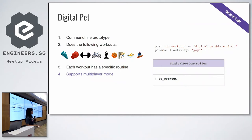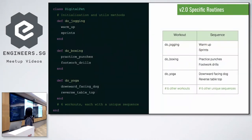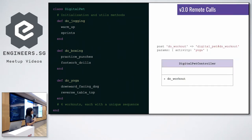We choose the action do_workout for the controller. In designing the endpoint, we have several options — one is nine endpoints for nine workouts, but that introduces a maintainability issue. A better implementation: one endpoint where the activity is passed as a parameter. So we have nine public methods each doing a specific routine, and one controller with one endpoint. The do_workout action takes an activity and decides which method to call — if the activity is yoga, it calls do_yoga; if boxing, it calls do_boxing. Can anyone suggest a way to implement that controller?